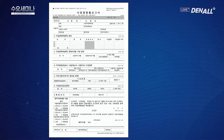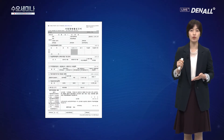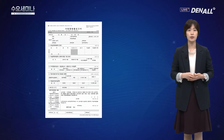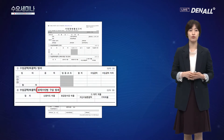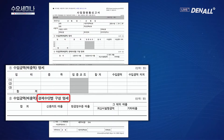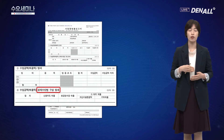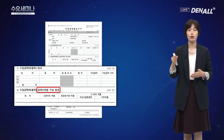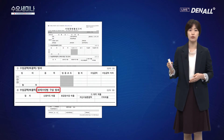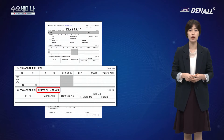대부분 치과에서 제반사항들을 다 작성해 주시게 되고, 이 내용을 세무사 사무실에서 검토하신 다음에 이상한 부분이 있으면 수정 후 제출하게 됩니다. 사업장 현황신고서 내용 중 가장 중요한 항목은 수익금액 매출액인데요. 매출액에서 결제수단별로 얼마의 매출이 발생했는지 적어주셔야 되기 때문에 결제수단별로 수납 관리를 잘 해주셔야지만 작성하실 때 어려움이 없겠습니다.